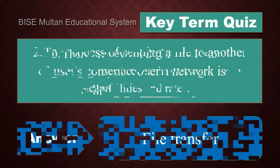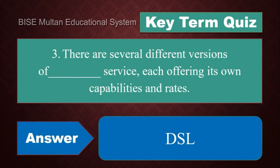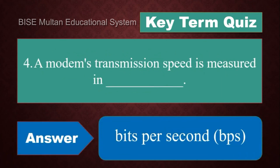Question number 3: There are several different versions of this service, each offering its own capabilities and rates. The answer is DSL. Question number 4: A modem's transmission speed is measured in bits per second.